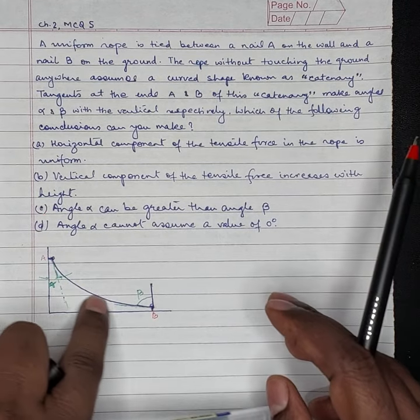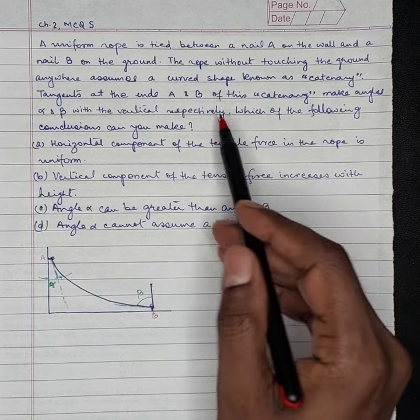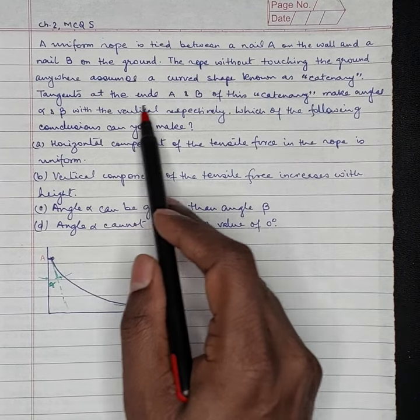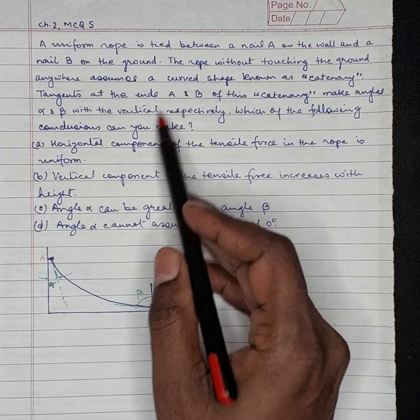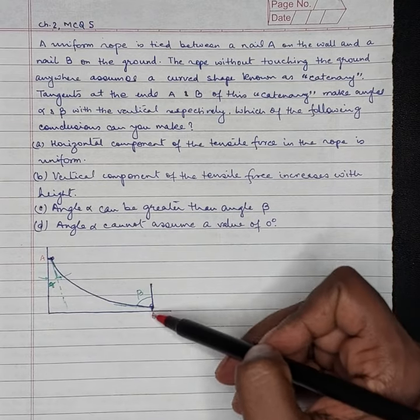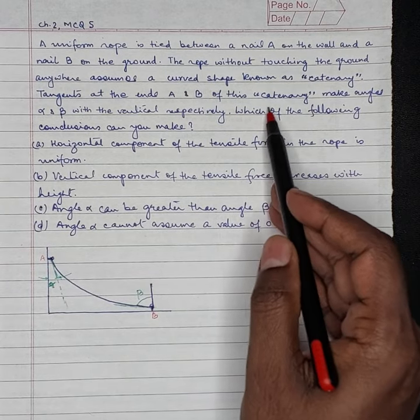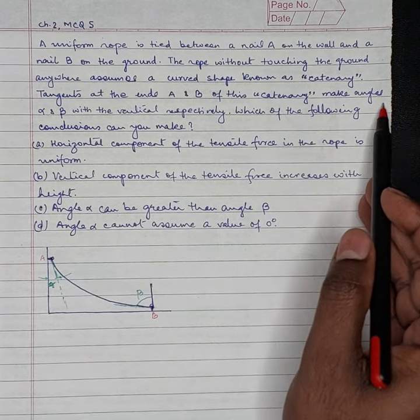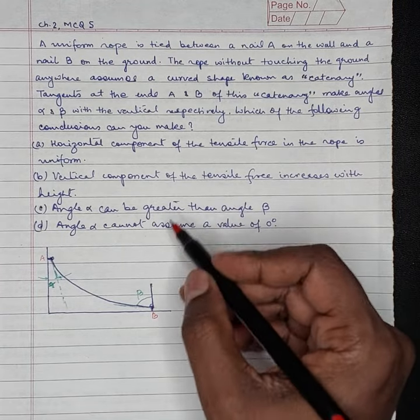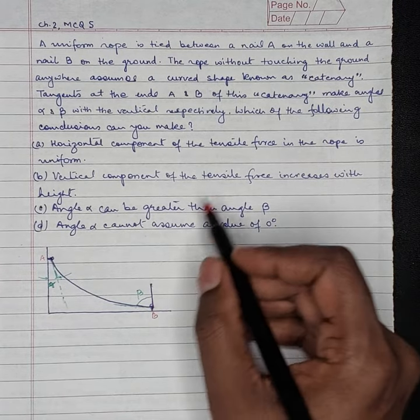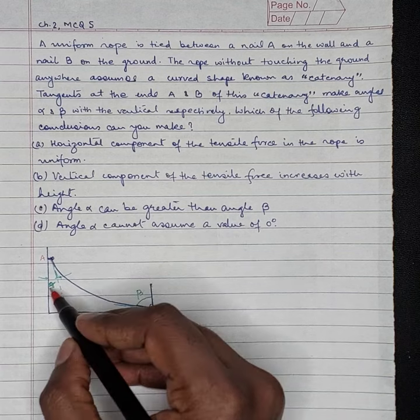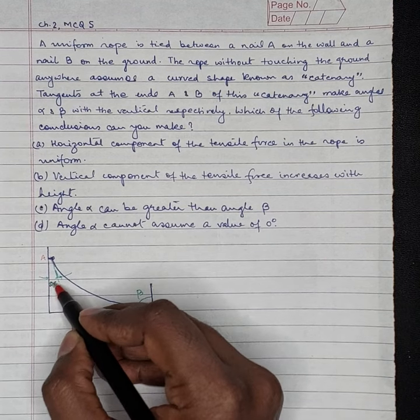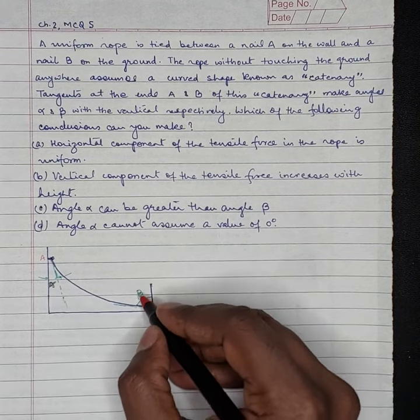This is catenary curve. Tangents at the ends A and B of this catenary make angles alpha and beta with the vertical respectively. Here it is alpha. This is beta.